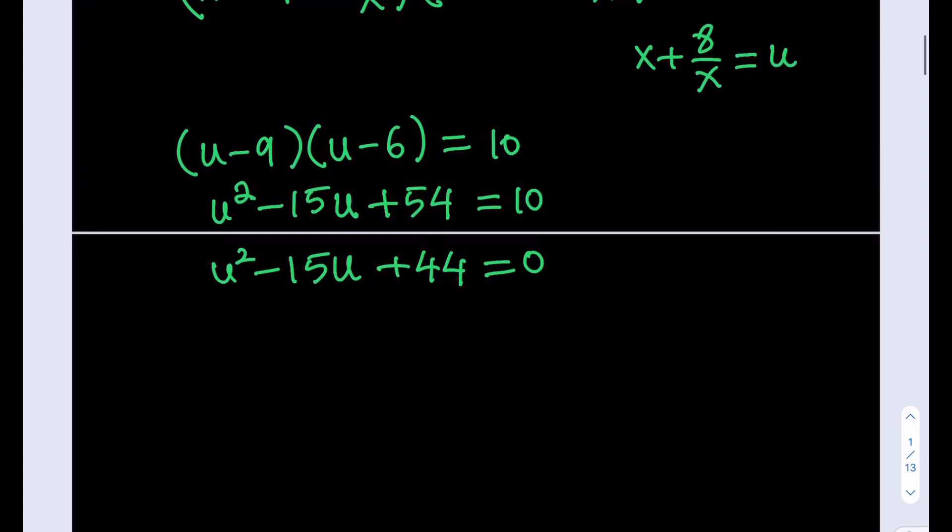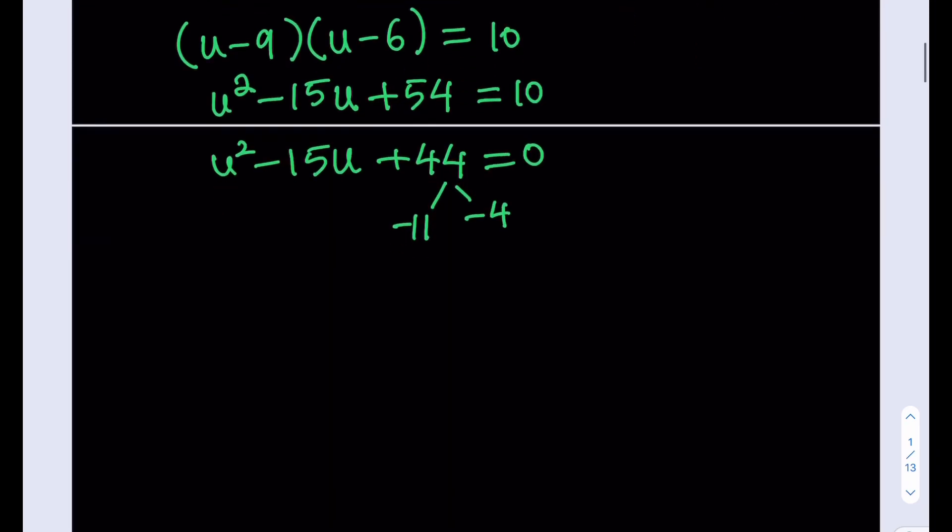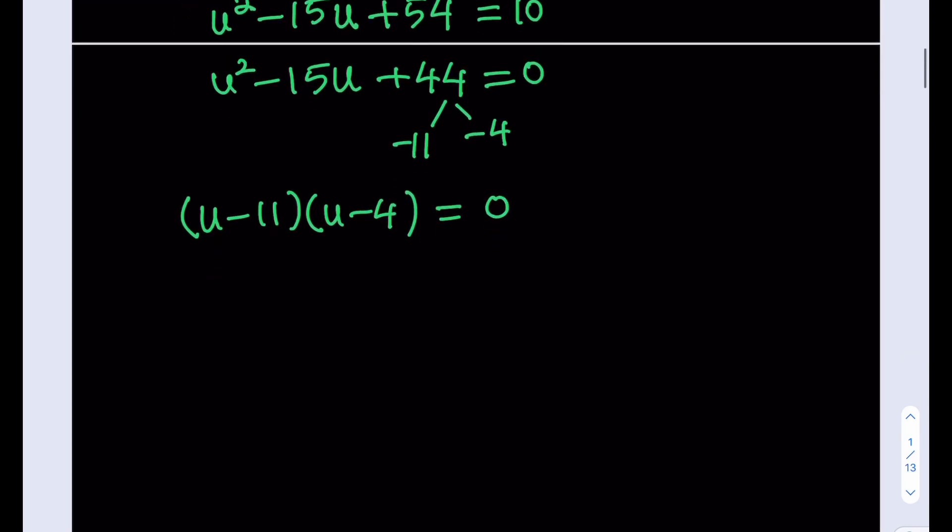So we're looking for two numbers whose product is 44 and whose sum is negative 15. Since the sum is negative and the product is positive, the factors need to be negative. So I'm going to use negative 11 and negative 4 for this purpose. So I'm going to split it up as u minus 11, multiply by u minus 4, and that's equal to 0. And as you can see from here, I'm going to be getting the two solutions very easily, u equals 11, and u equals 4.